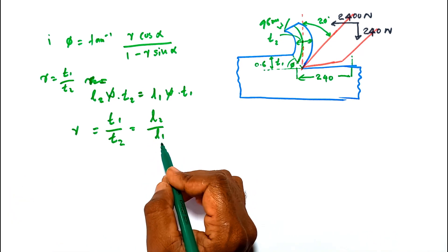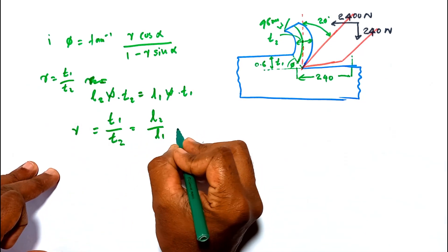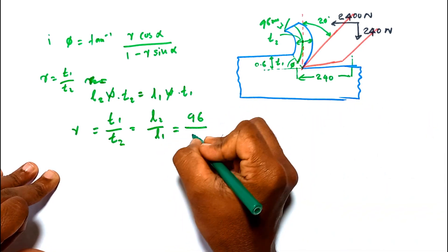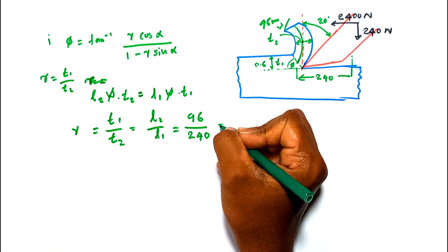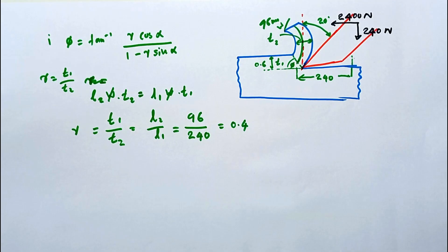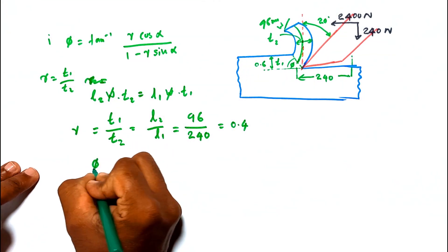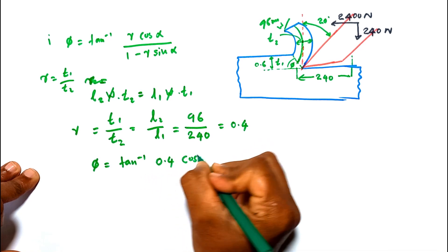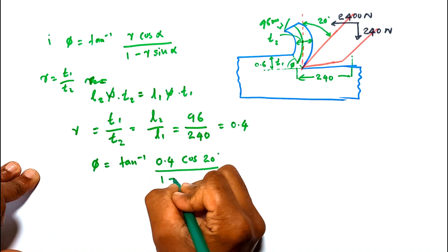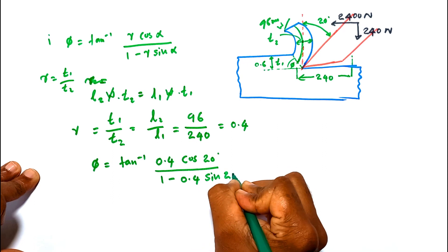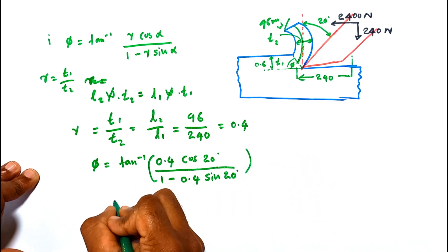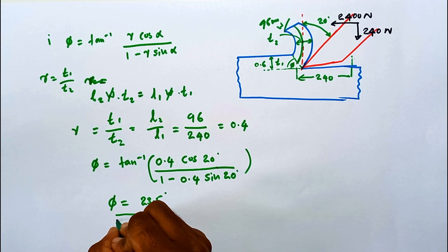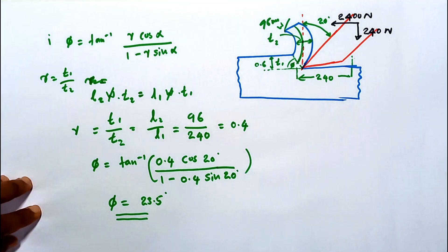In this problem l2 and l1 are given, so r equals 96 divided by 240, which equals 0.4. Now we can calculate φ: φ equals tan inverse of 0.4 cos 20 degrees divided by 1 minus 0.4 sin 20 degrees. Applying this equation, φ equals 23.5 degrees. This is the answer for the first part.